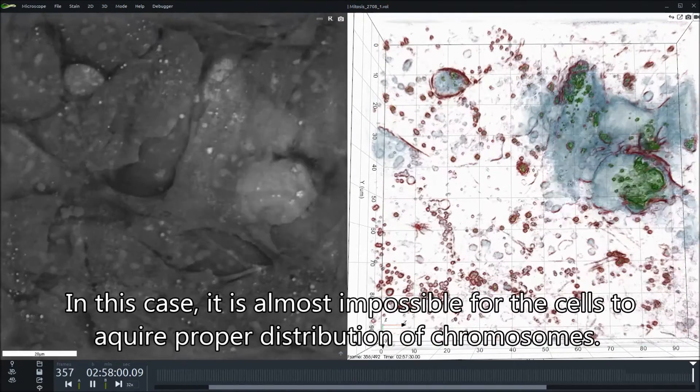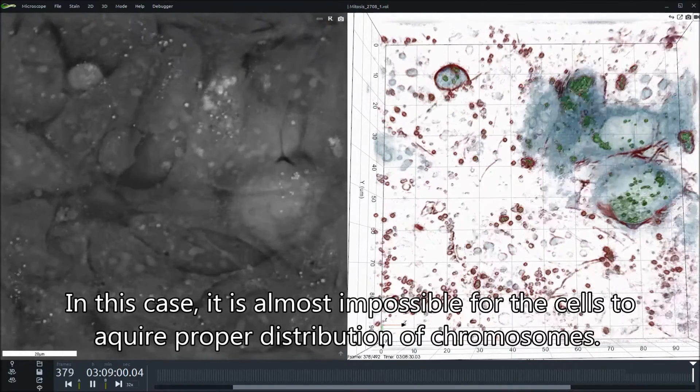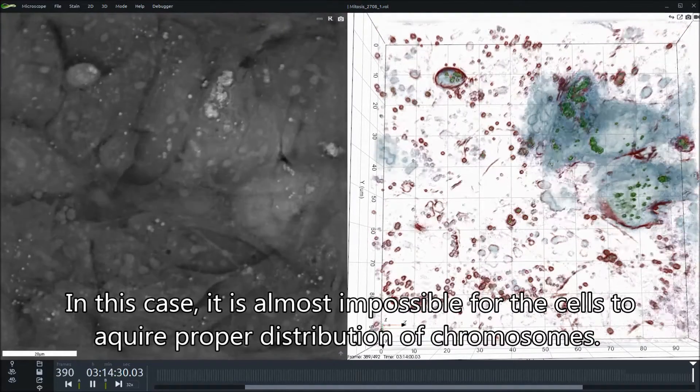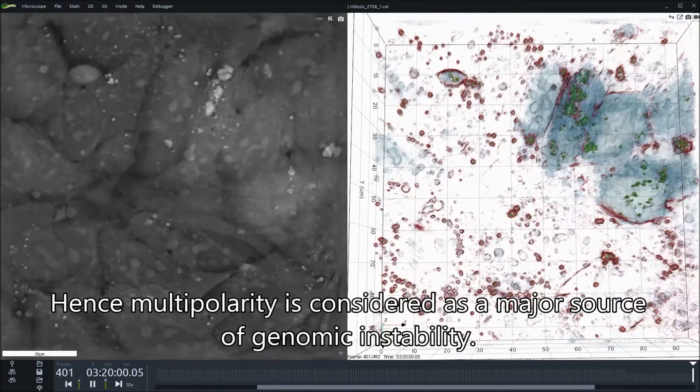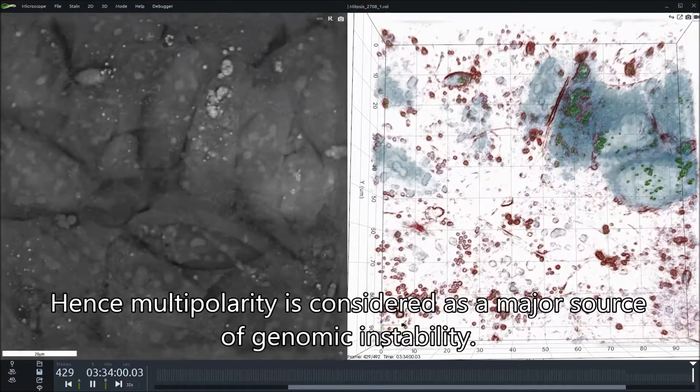In this case, it is almost impossible for the cells to acquire proper distribution of chromosomes. Hence, multipolarity is considered as a major source of genomic instability.